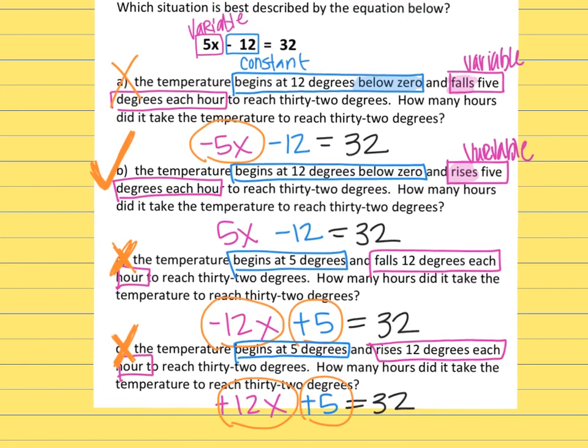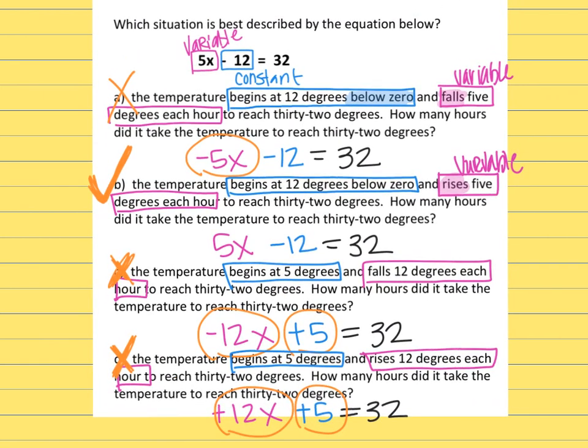So even after checking all the answer choices, the best one was answer choice B because it made sure that the variable was positive 5 and the constant was negative 12.